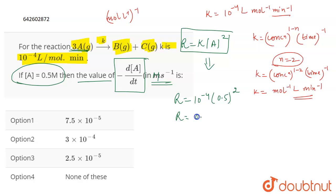So this becomes R is equal to 0.25 into 10 to the power minus 4 molar minute inverse. Because molar is mole per liter, so it can be written as molar minute inverse. Now, this is the value of R.